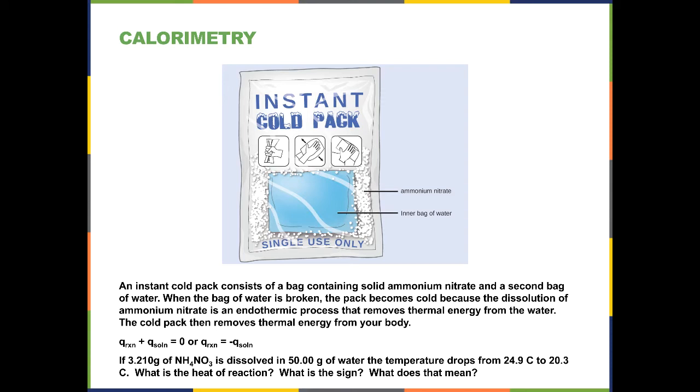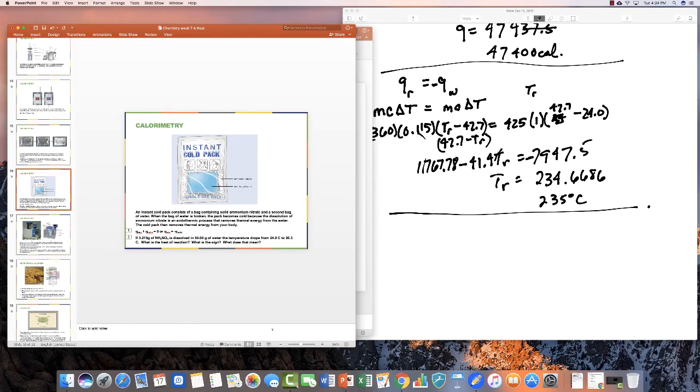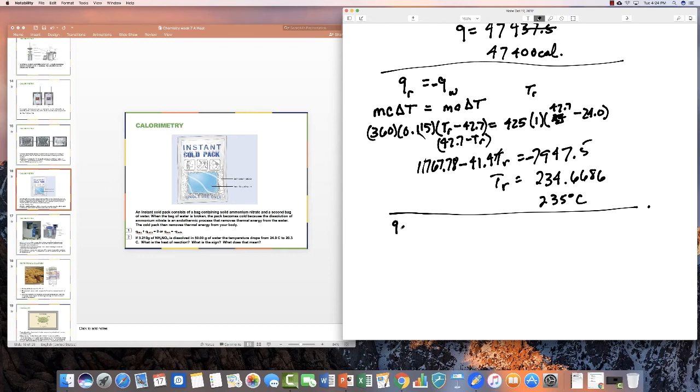So if we have 3.21 grams of ammonium nitrate dissolved in 50 grams of water, and the temperature drops 4.6 degrees, what is the heat of reaction, what is the sign, and what does that sign mean? So let's take a look at this one. First of all, we have to write the equation, which is the heat of reaction is minus the heat of solution.